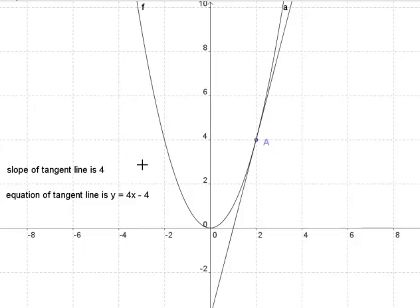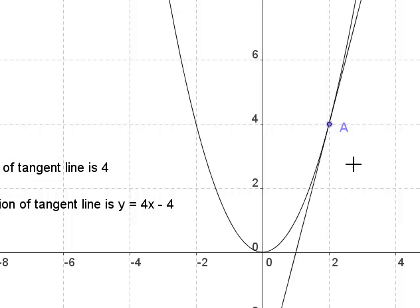You may also notice that if we look over here, the slope of this tangent line is 4. Why is that? Let's look at this line for a second.